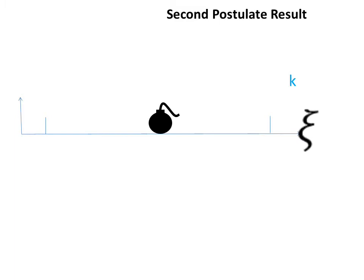The second postulate of Einstein's so-called theory of relativity says that the speed of light is constant, independent of the velocity of the source of light. Therefore, according to the second postulate, once the flash occurs it doesn't matter whether or not the source that emitted the flash was in motion or was at rest with respect to the system. The source of light in all cases behaves as if it were at rest with respect to the system.